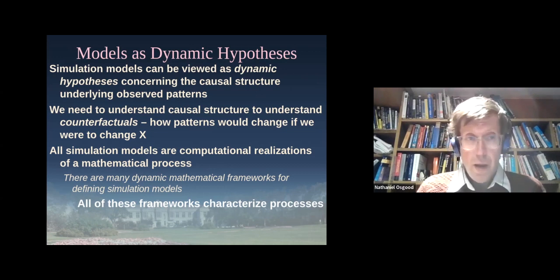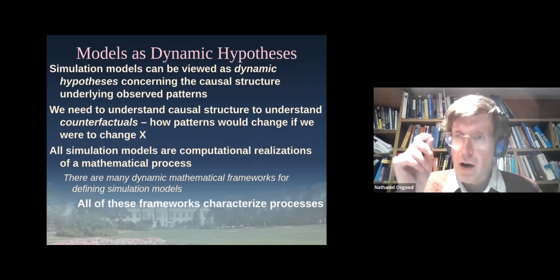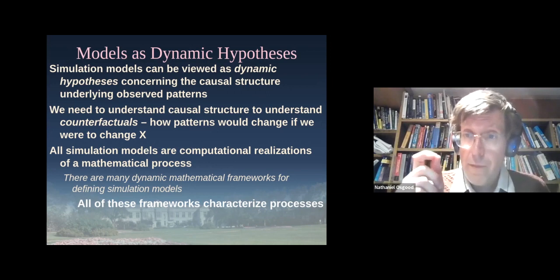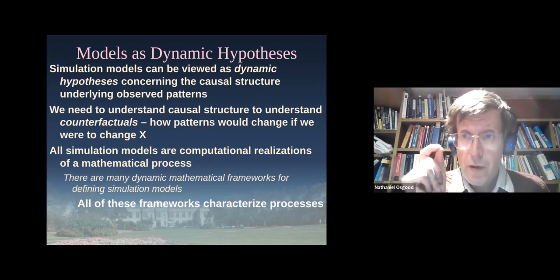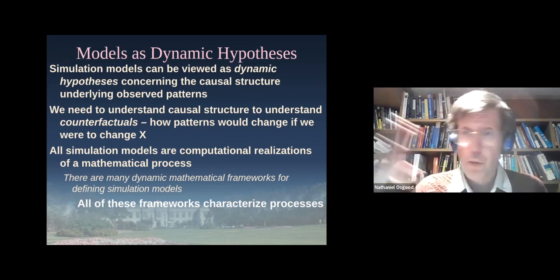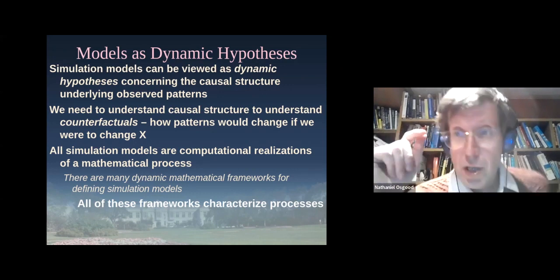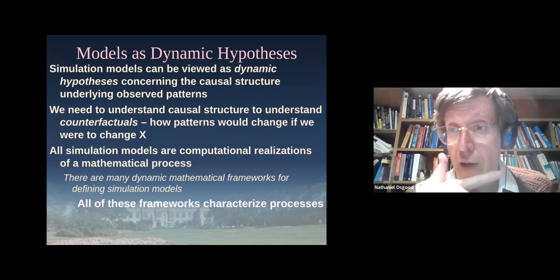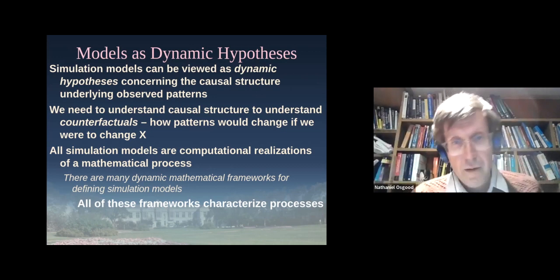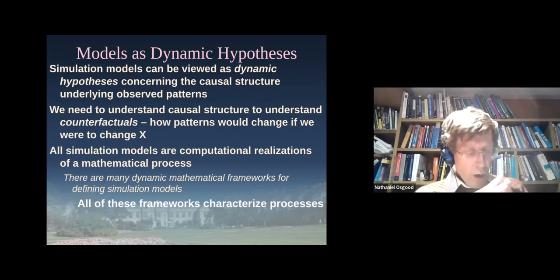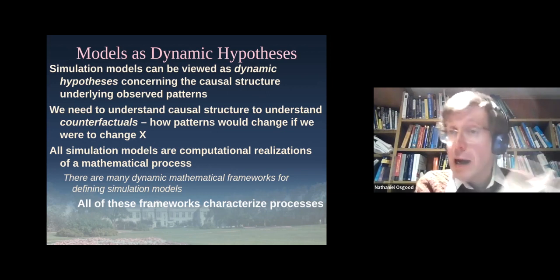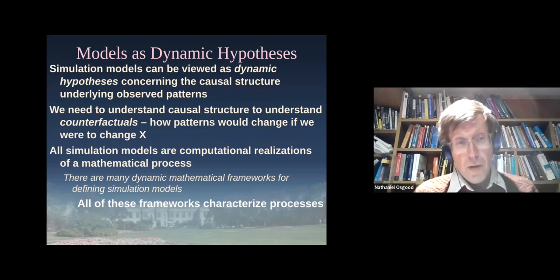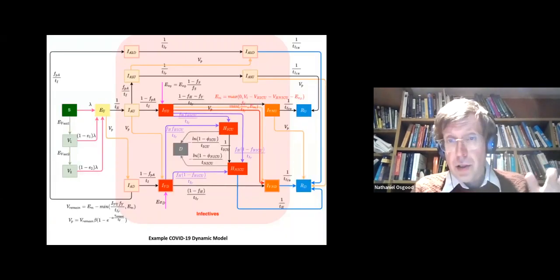These models can be viewed as dynamic hypotheses concerning what's going on in the world. Unlike hypotheses in our heads, they're operationalizable, actionable, and precise enough — not always accurate, but precise enough — to say what the consequence will be if this were true. That precision allows us to spot their flaws more quickly, because we can run them, see if what they expect is consistent with the evidence, and refine our thinking. These systems posit some causal structure, some mechanisms in the world, to use the language of Pawson and Tilly and critical realist thought.